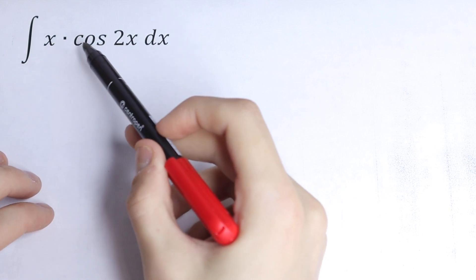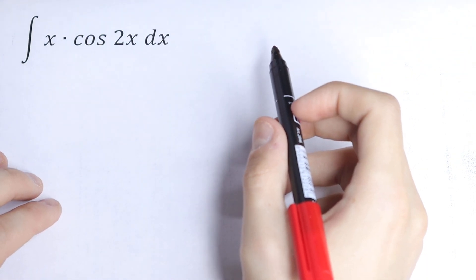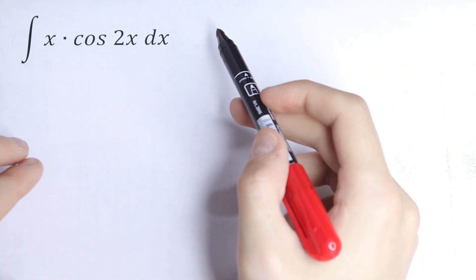What is the integral of x times cosine 2x dx? How can you solve this? I'm just doing a little trick right here. Let's integrate this by parts.